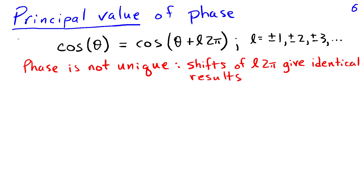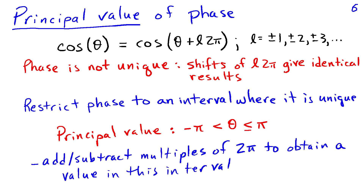While discussing phase, we need to introduce the notion of the principal value, because phase is not unique: cos(θ) is identical to cos(θ + 2πk) for any integer k. To get a unique quantity, we restrict the phase to the interval between −π and π. If you compute a phase and need the principal value, add or subtract multiples of 2π as needed to bring it into that interval.